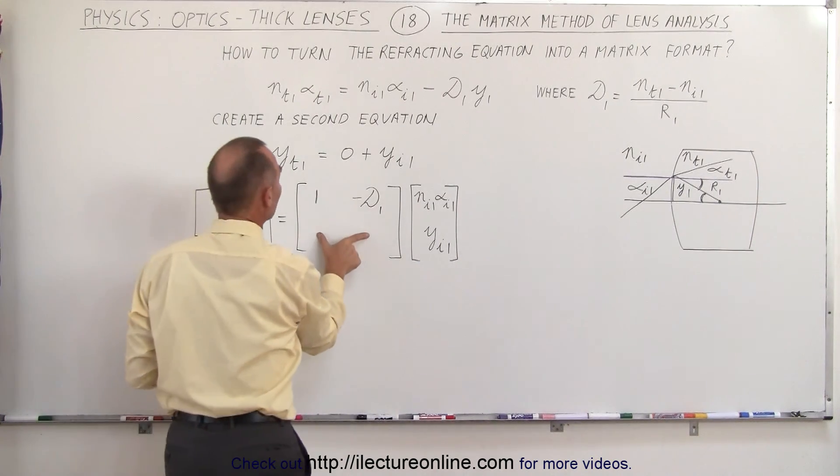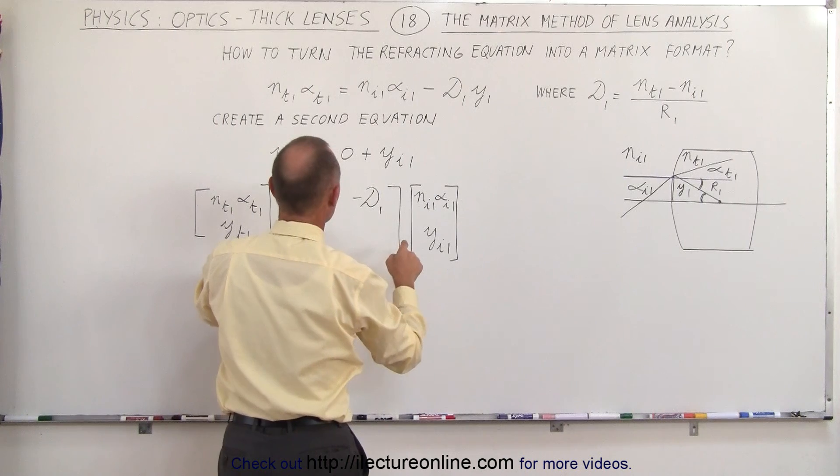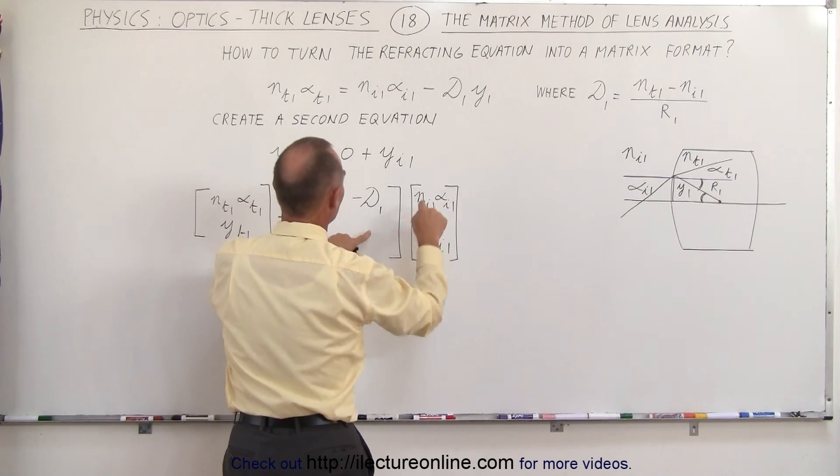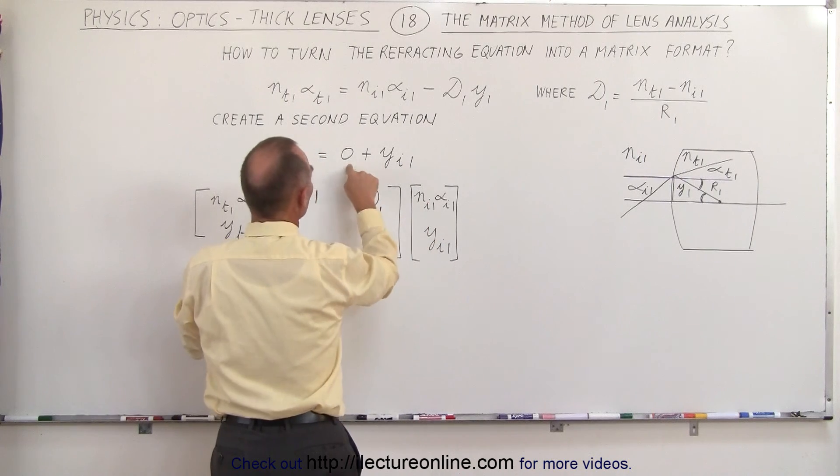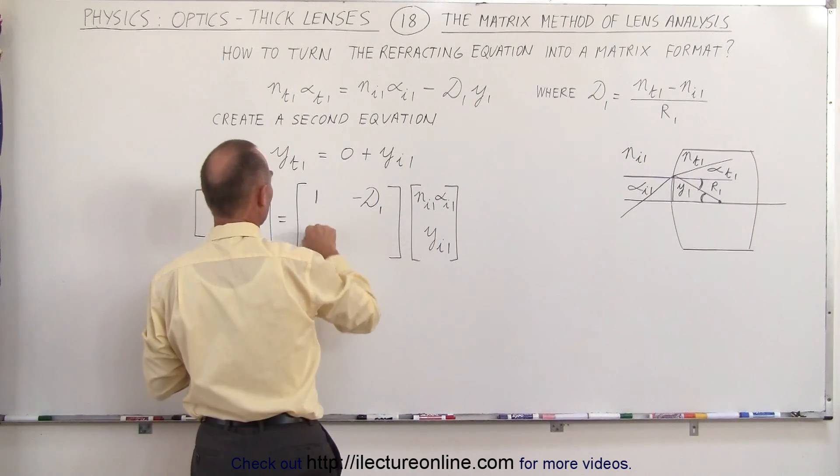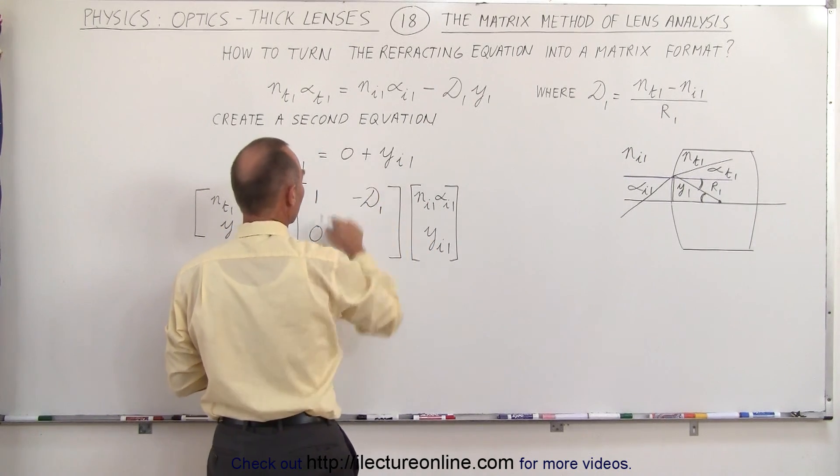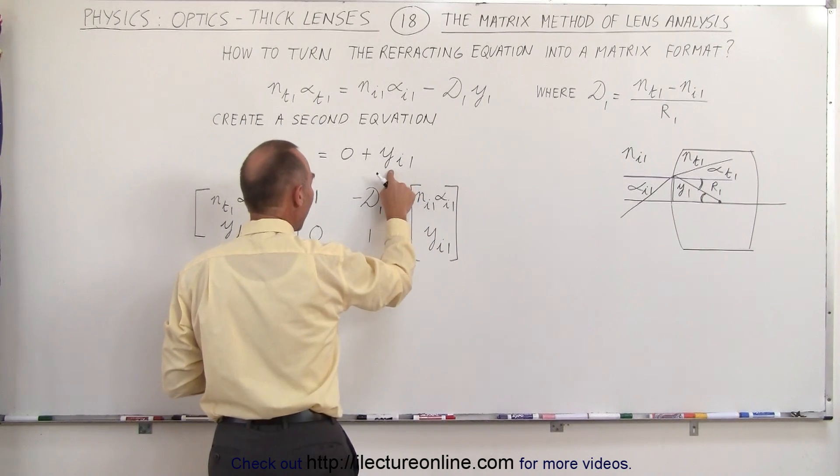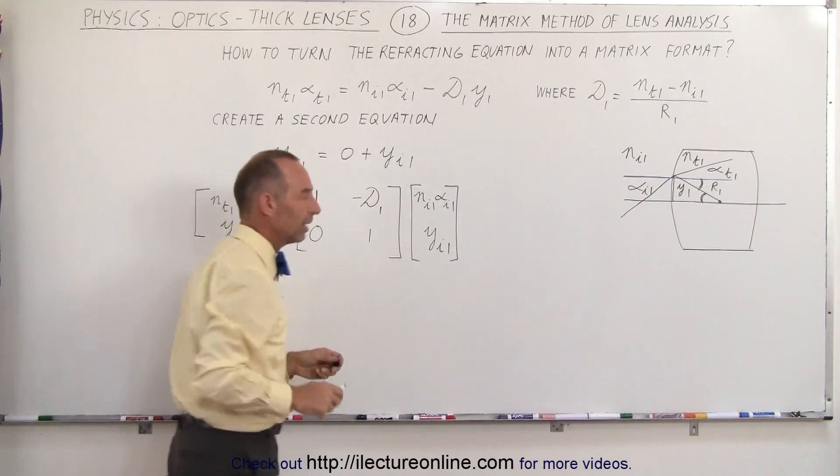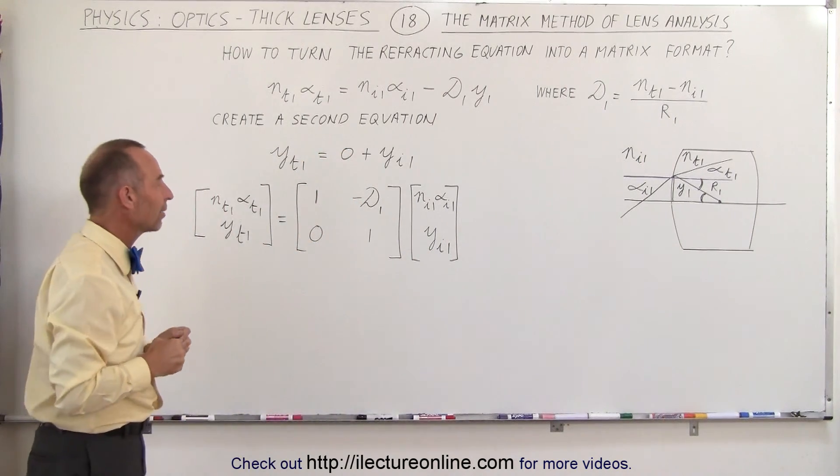Now we need something here such that when I multiply this times this plus this times this I end up with this. The first thing I need is a 0, which means I need a 0 here because 0 times this gives me 0, and then I need a 1 here because 1 times this gives me yi1, the height of the entry point just before the boundary.